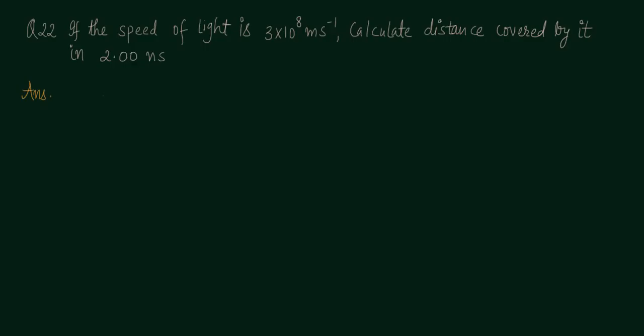Distance is velocity times time. For the units, we need to convert nanoseconds. Nano is 10 to the power minus 9 seconds.